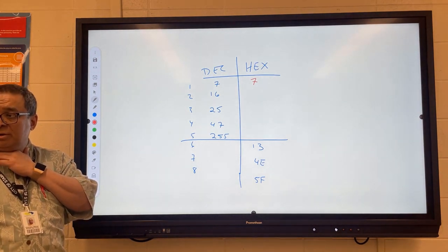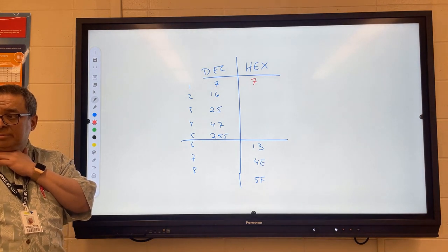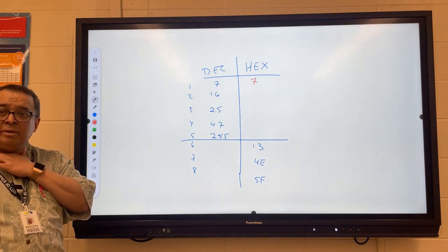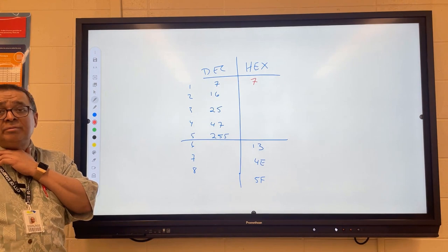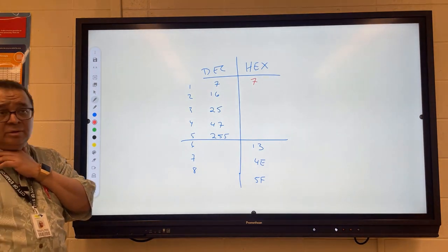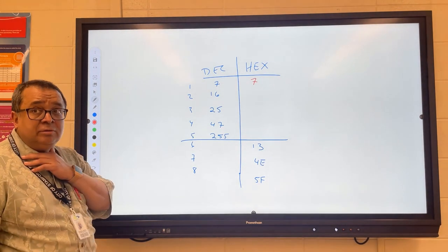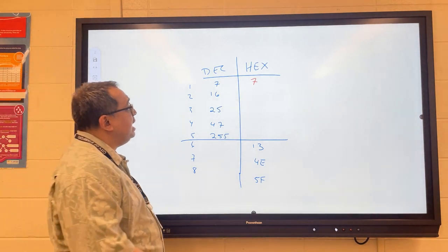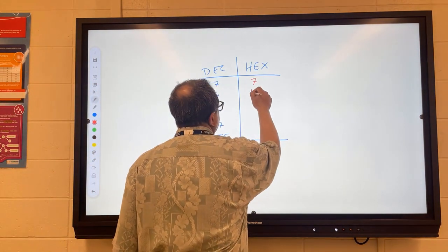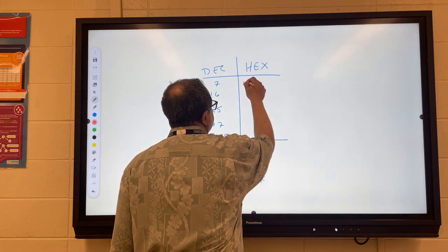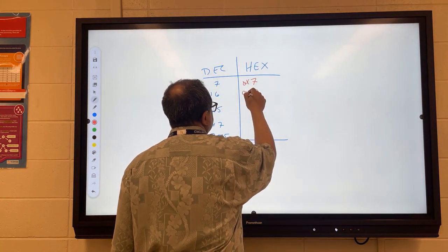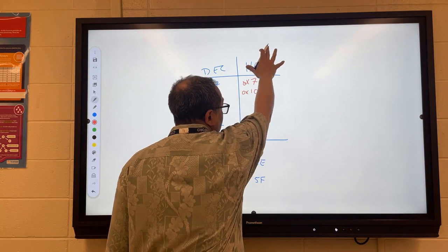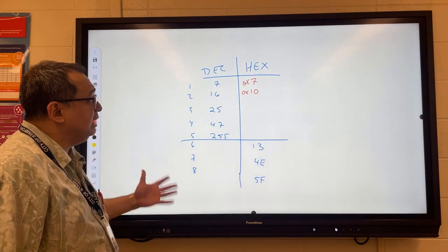So what comes after F? No? Anyone want to take a whack at it? Oh, Mr. F, sorry? F is 15. Yes, sir. It's 10. Now, I should put the 0x in front of each of these, but I've got the label, the whole column labeled, so I'm kind of leaving out the 0x part.